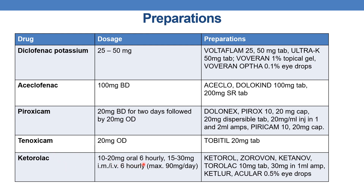The next drug is ketorolac. The dose is 10–20 mg orally every 6 hours, or 15–30 mg IM or IV every 6 hours with a maximum of 90 mg per day. Marketed preparations are Keterol, Zorovone, Ketanol, and Tolorac in 10 mg tablet and 30 mg in 1 ml ampoule, and Ketalur and Acular available as 0.5% eye drops.